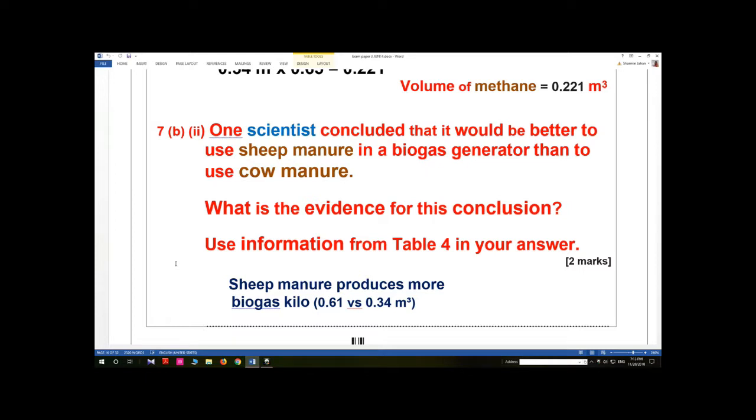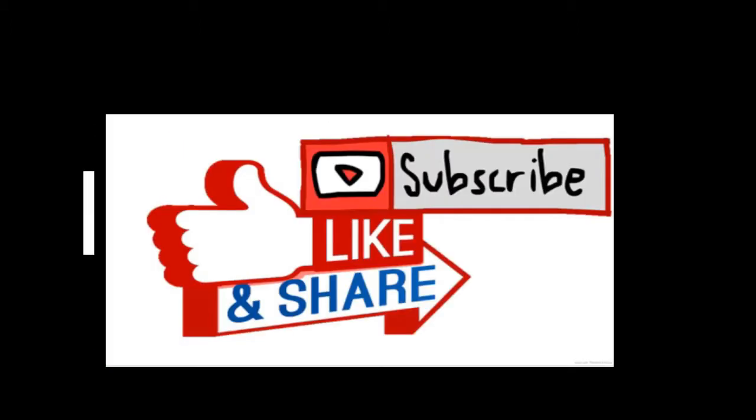Sheep manure produces more biogas per kilo: 0.61 versus 0.34 m³.